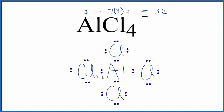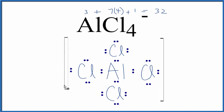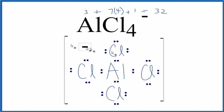So this is a good Lewis structure for AlCl4 minus. It is an ion, so we should put brackets around it and then put a negative sign on the outside to show that it's an ion. And that's the Lewis structure for AlCl4 minus, and this is Dr. B.